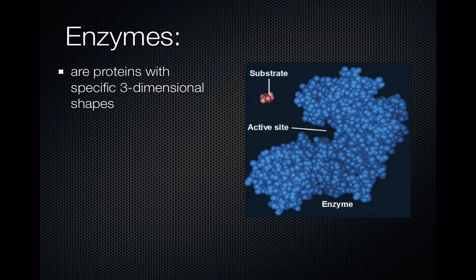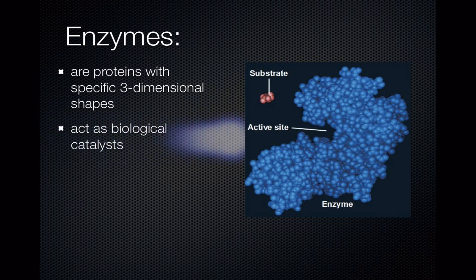Enzymes are always proteins and all proteins have a three-dimensional shape. Enzymes have a three-dimensional shape that produces a location on the molecule somewhere where a substrate molecule can fit, and if the substrate combines with the enzyme then something's going to happen to turn the substrate into a product.